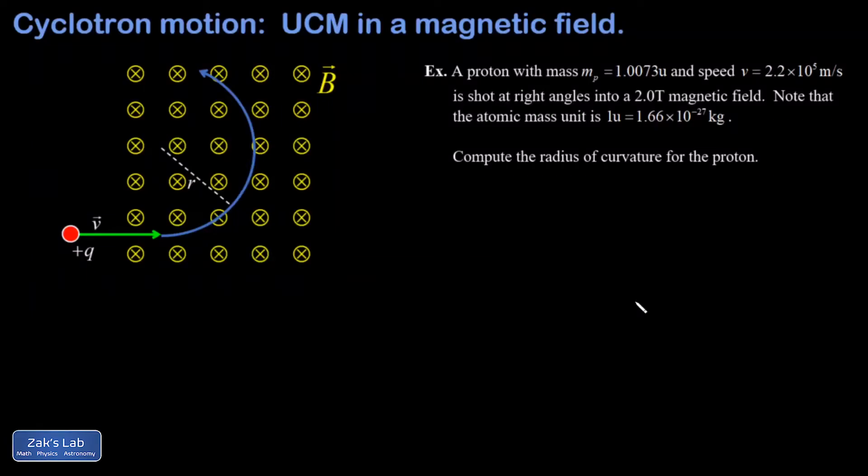In this video, we're introducing the idea of cyclotron motion. This is the uniform circular motion of a charged particle in a magnetic field.